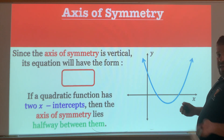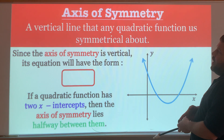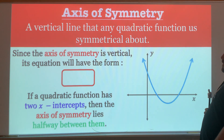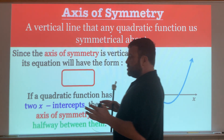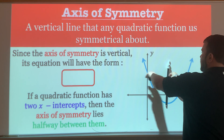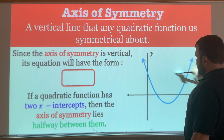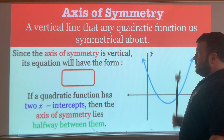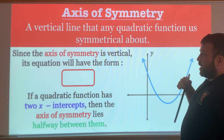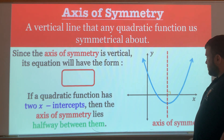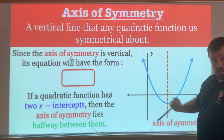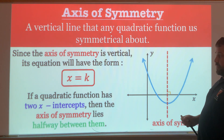What exactly is an axis of symmetry? The axis of symmetry is the vertical line — a line that goes up and down — of a quadratic function, your parabola, that both sides are symmetrical about. Each side is the same distance away; if you took the same y values, each x value would be the same distance away. Since the axis of symmetry is vertical, its equation has the form x equals k, and it makes a right angle with the x-axis, so it's parallel to the y-axis.